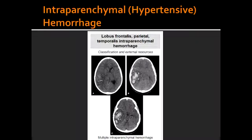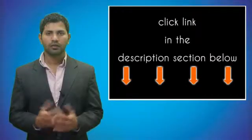Where does the intraparenchymal hemorrhage most commonly occur? It typically occurs in the basal ganglia and the internal capsule, such as in Charcot-Bouchard aneurysms of the lenticulostriate vessels, but it can also be lobar.